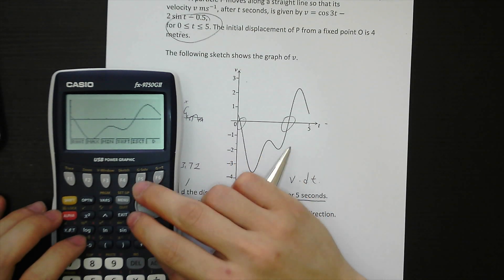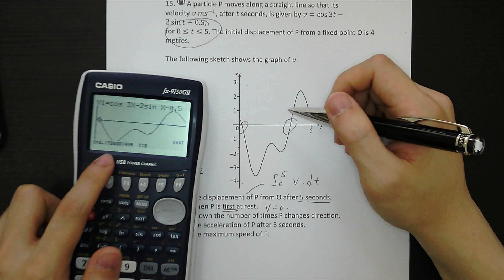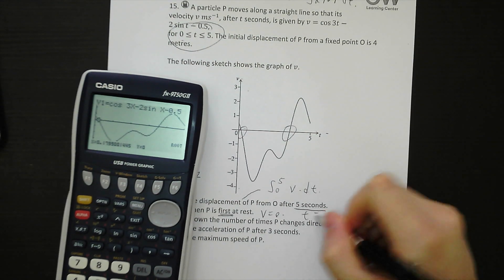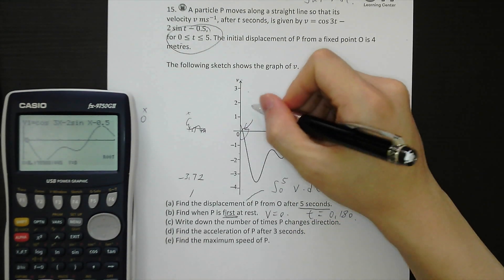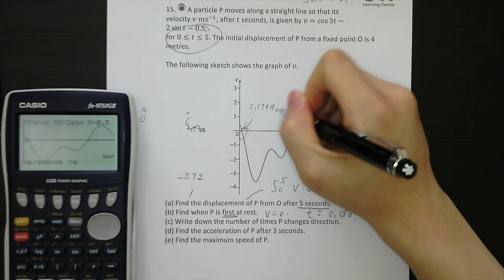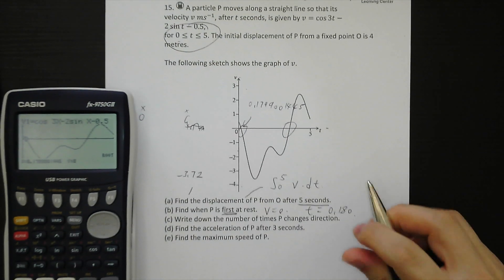And now I can trace the root. And then root. 0.1799. So 0.180. This point would be 0.1799001445, but we round up to 3 significant figures for the answer.